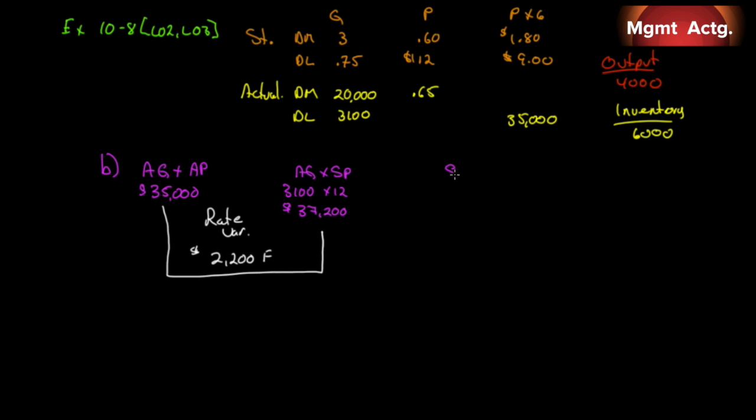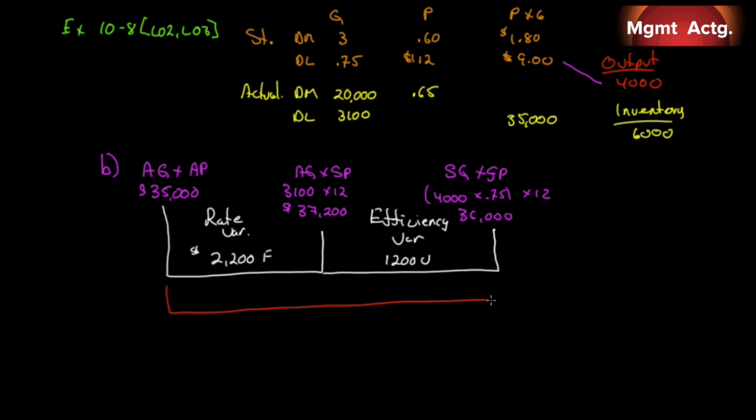And we're going to compare that with our standard, the standard quantity based on an output of 4,000 what we should have used, multiplied by the standard price. We had an output of 4,000 units. Each unit would have required 0.75 labor hours, and we should have paid $12 per labor hour. We multiply that out, we get $36,000. And if we compare that, we should have spent 36, we spent 37.2, we have 1,200 unfavorable. This is our efficiency variance. So our total variance is 2,200 favorable, 1,200 unfavorable, allows for 1,000 favorable.